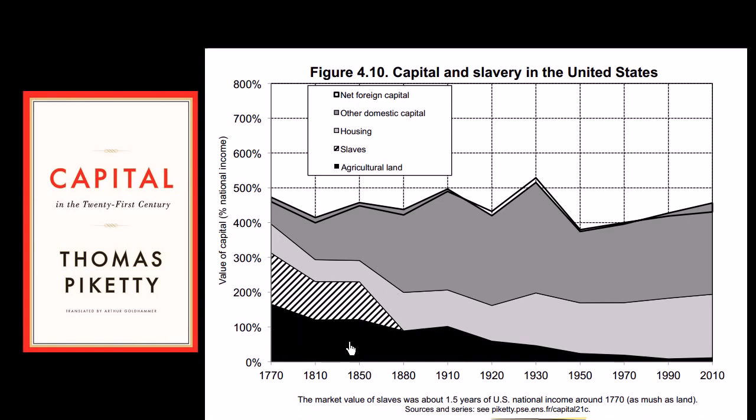You see down, at least in the United States, you see agricultural land. In 1770, it was a reasonable percentage. This is the value of capital as a percentage of national income. So, the value of the land as a percentage of national income was much higher than it is today.